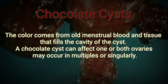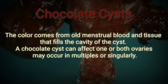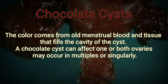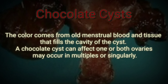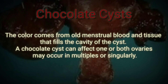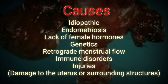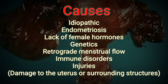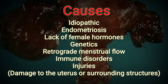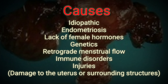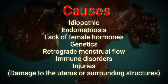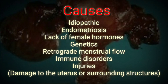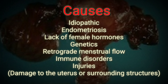A chocolate cyst can affect one or both ovaries and may occur as multiple or singular cysts. Chocolate cysts occur in 20 to 40 percent of women who have endometriosis. Causes include idiopathic endometriosis, lack of female hormones, genetics, retrograde menstrual flow, immune disorders, and injuries or damage to the uterus or surrounding structures.